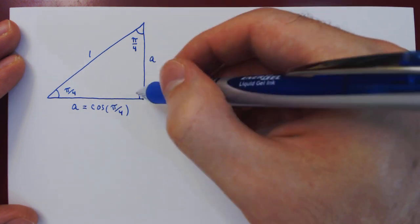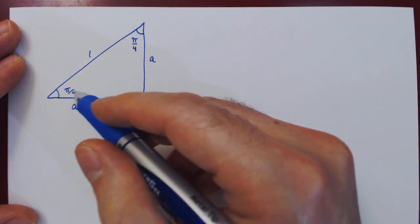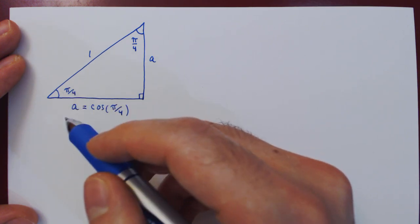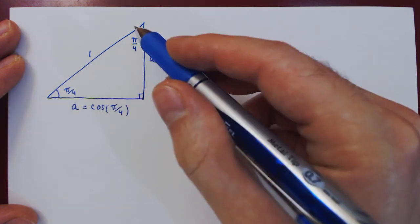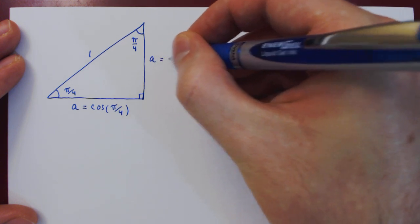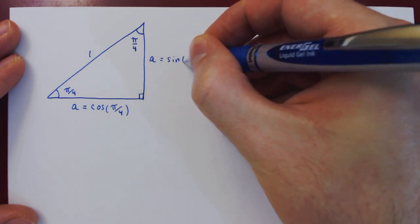And if you look at now A being the opposite side of pi over 4, then take the sine of pi over 4, which is the opposite over 1. Therefore, A is the sine of pi over 4.